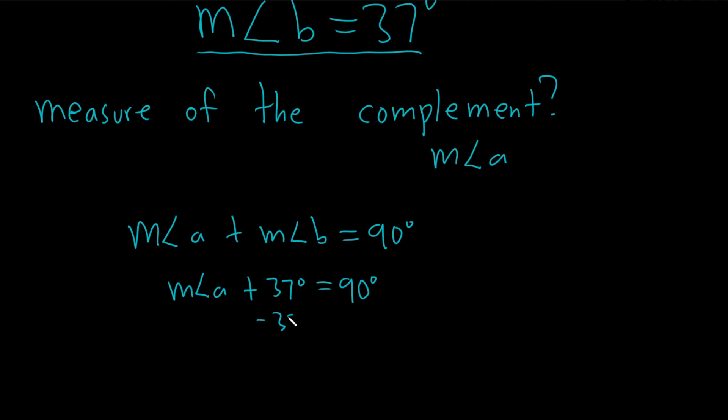So you just subtract 37 from both sides, so we have the measure of angle A and that's equal to 90 minus 37, which is 53 degrees.